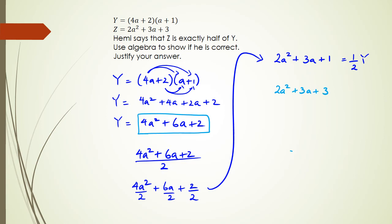So basically in this case, you say that Hemi is incorrect. Hemi is incorrect because he has 3 instead of 1.